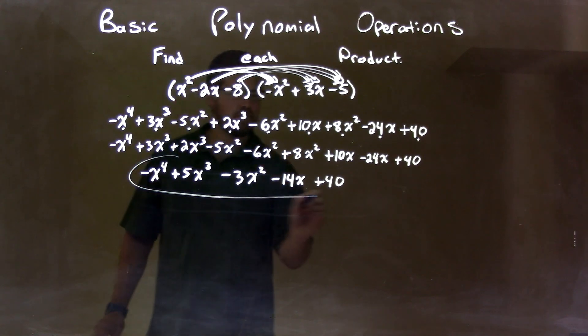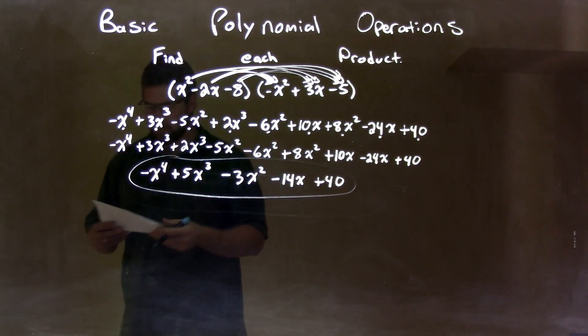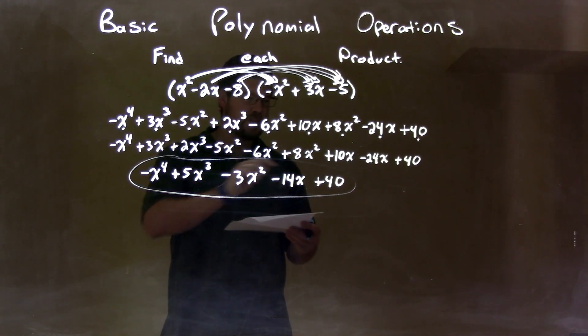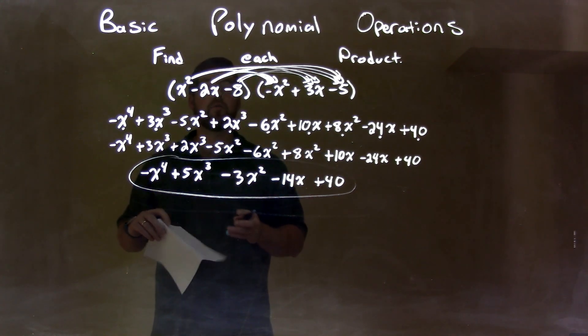So, now we have our final answer of negative x to the fourth plus 5x to the third minus 3x squared minus 14x plus 40.